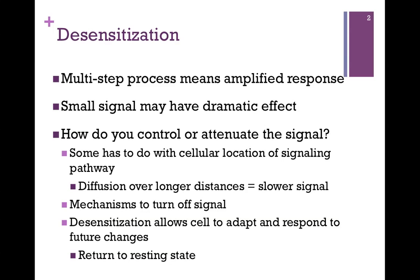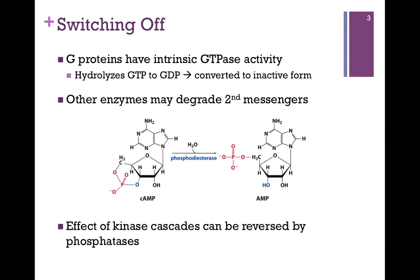But we also need mechanisms to turn off the signal. Desensitization allows the cell to adapt and respond to future changes — that is, to return to a resting state. Our G-protein has intrinsic GTPase activity, meaning it's going to be in the active GTP-bound form only for a limited period of time, then hydrolyze that to GDP and convert to an inactive form. Once the G-protein is inactive, it can no longer activate adenylate cyclase, and we don't make any more second messenger.